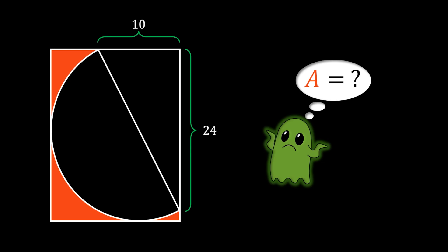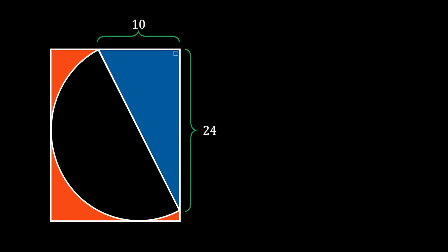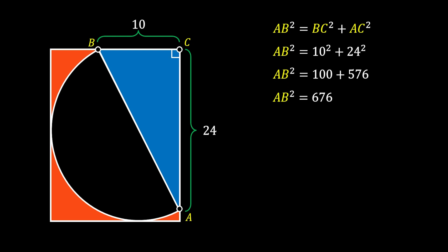Alright, let's get to the solution. First, we're going to notice this blue right triangle at the right side of our rectangle and we're going to label it as A, B and C. We can use the Pythagorean theorem here: the hypotenuse AB squared must be equal to the leg BC squared plus the leg AC squared. Substituting our values and simplifying, we get that AB squared is equal to 676.